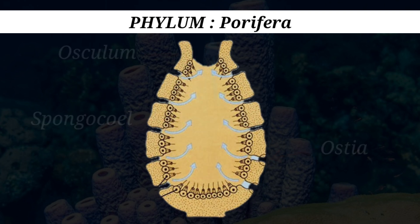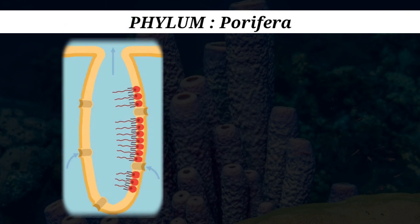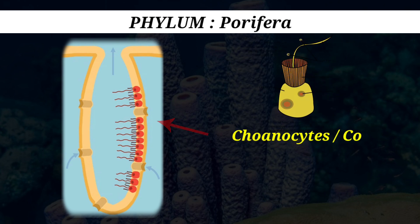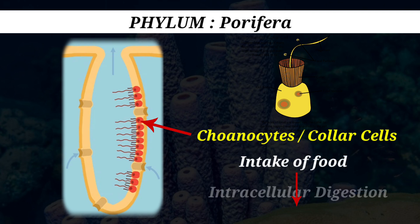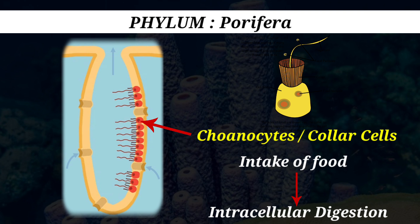The spongocoel and the canals are lined with unique cells called coanocytes, or collar cells, that facilitate the intake of food particles, followed by intracellular digestion.